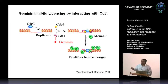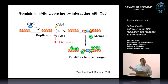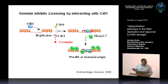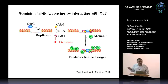This is the canonical picture of how replication origins get licensed. There's ORC, which binds sequences that are not very well defined. ORC recruits CDC6 and CDT1, which together facilitate the loading of the MCM2-7 complex, which is of course a major component of the replicative helicase. A student in my lab discovered many years back — ten years back — that Geminin interacts with CDT1. Geminin had been known to prevent the loading of MCM2-7 complexes, and we found the mechanism: by interacting with CDT1, it prevents the loading of MCM2-7.